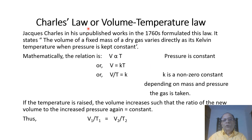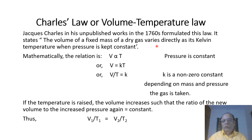Now we come to Charles' law, or the volume-temperature law. Jacques Charles, in his unpublished works in the 1760s, formulated this law. It states: the volume of a fixed mass of a dry gas varies directly as its Kelvin temperature when pressure is kept constant — so pressure is the parameter held constant here.